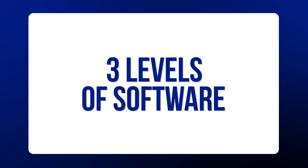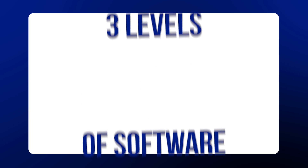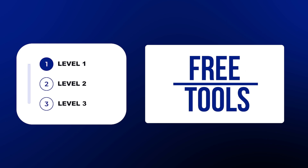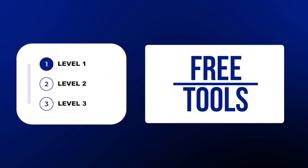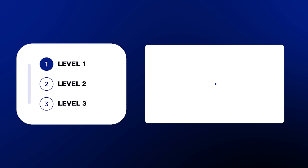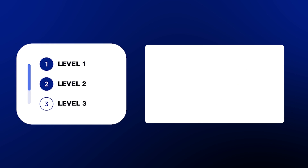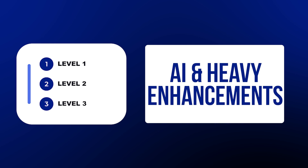For each part of the tech stack, I'm going to have three different levels of software you can use and examples within each of those levels. Level one will always be free tools that meet the base need for that given category. Level two will be a mix of free and paid tools that offer additional features than level one that may help you become a little bit more effective. And then level three is going to include AI or heavy enhancements that can make your work easier if you feel it's necessary.